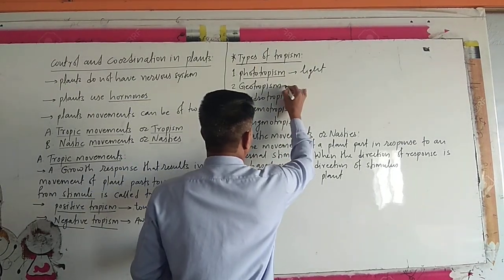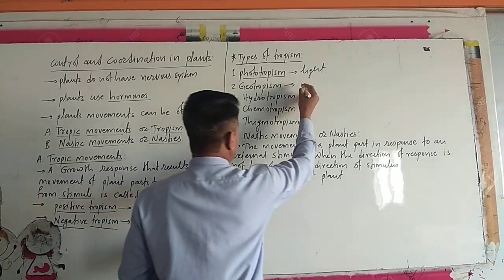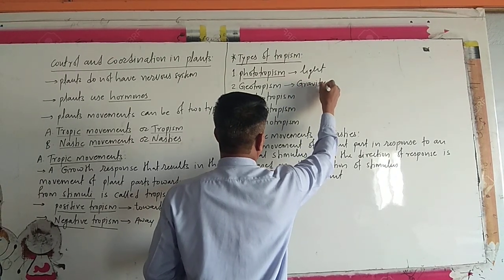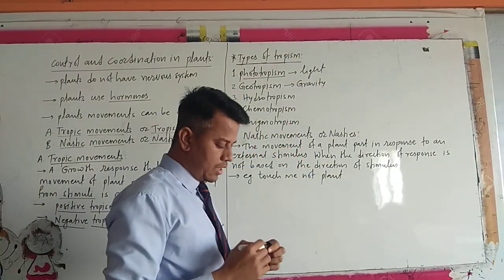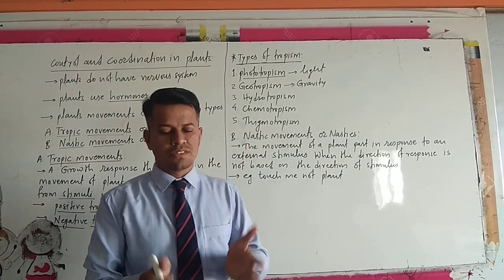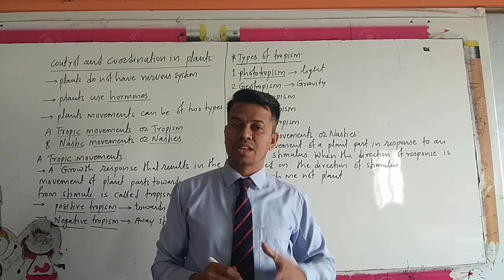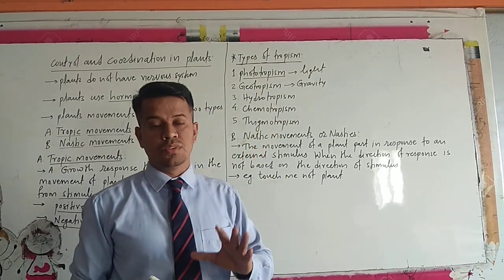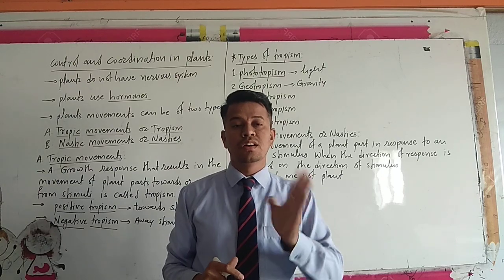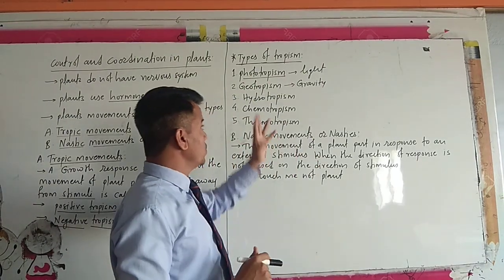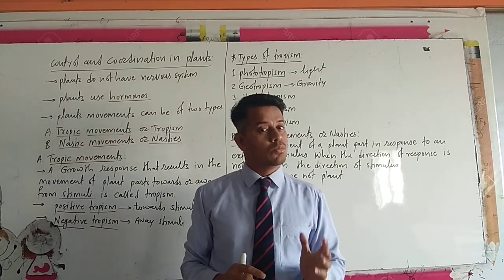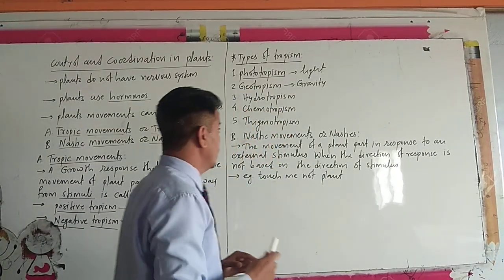Then geotropism. Geotropism means it is sensitive towards gravity — the movement or growth of plant parts towards gravity. The growth of roots is positive geotropism, and the growth of the shoot is negative geotropism, because it is away from gravity.